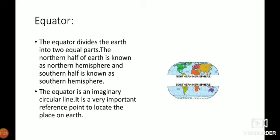Equator. Equator is a very important line on the globe. Why? Because equator divides the earth into two equal parts. The northern half of the earth is known as the northern hemisphere and the southern half is known as the southern hemisphere.